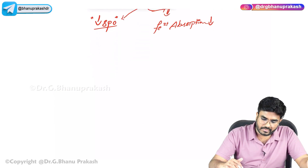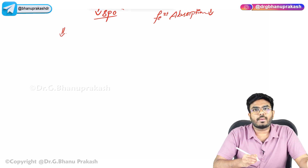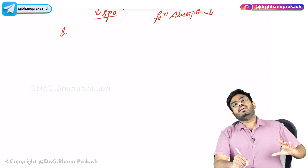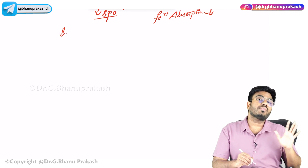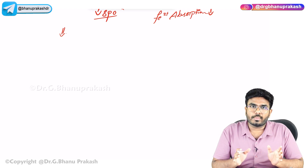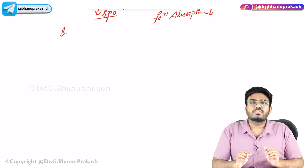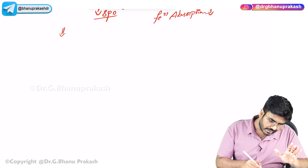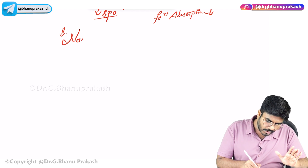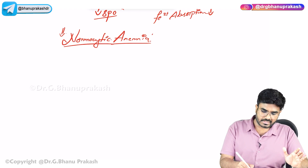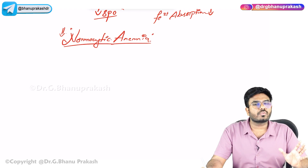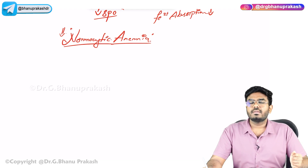If you look at the peripheral smear, even though I'm discussing anemia of chronic disease under microcytic anemias, most of the time the size of the RBCs is maintained within the normal range of 80–100 fL. So anemia of chronic disease most commonly falls under normocytic anemia — meaning normal size RBCs.